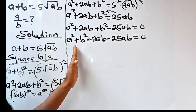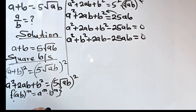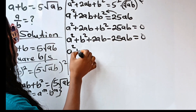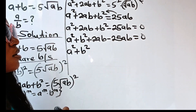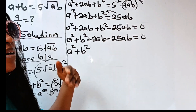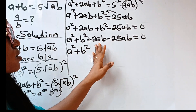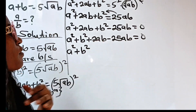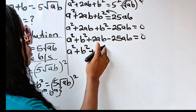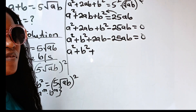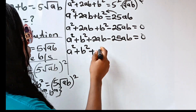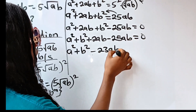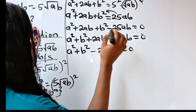So if we combine like terms, we have A squared plus B squared plus 2AB minus 25AB, which gives us A squared plus B squared minus 23AB, all equal to 0.